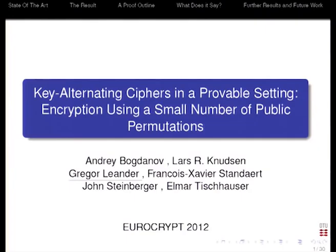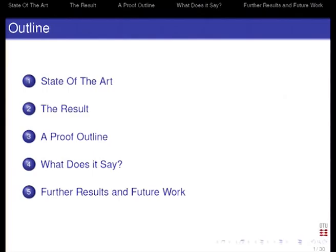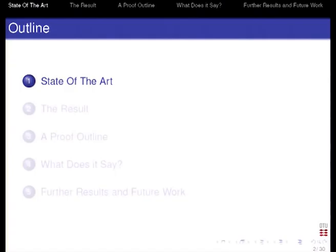This is joint work with Andrej Bogdanov, Lars Knudsen, FX Standaert, John Steinberger, and Elmar Tischhauser. The outline of the talk: first, motivate the topic; then state the result; give an outline of part of the proof; interpret the results; mention some further results in the paper; and mention future topics that seem interesting.